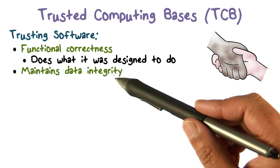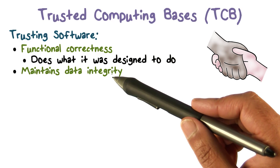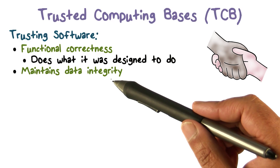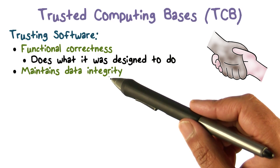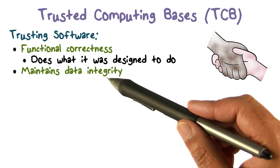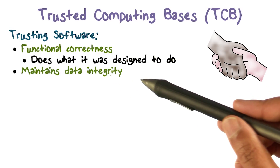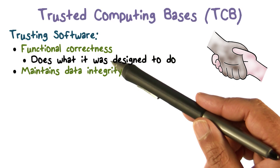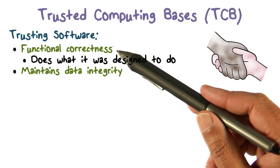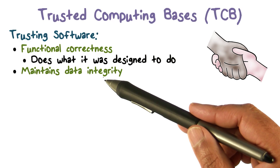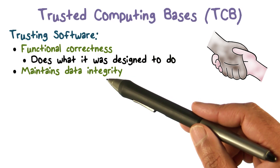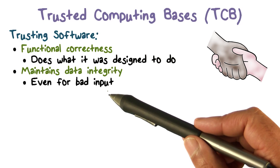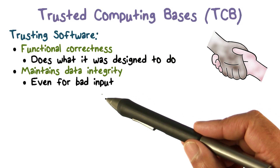Now to implement those functions, it does have data structures — a data state that it makes use of. Also, it may be protecting other data that belongs to different users and programs and things like that. If it's trusted software, we want it to implement the functions it's supposed to do correctly, as well as maintain the integrity of the data that it is going to rely on.